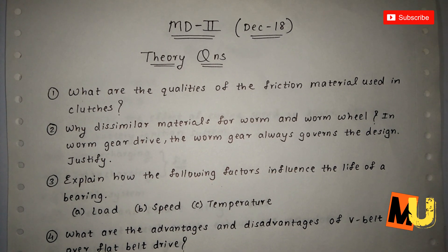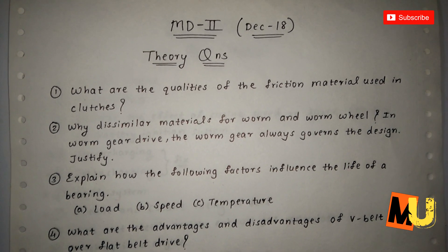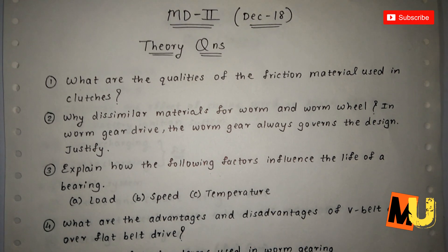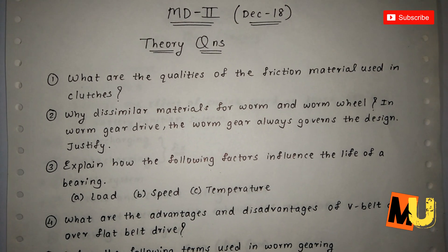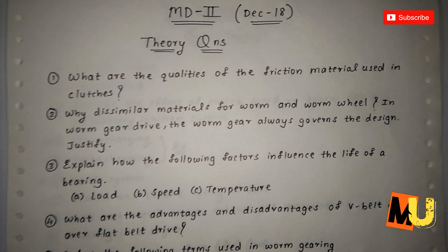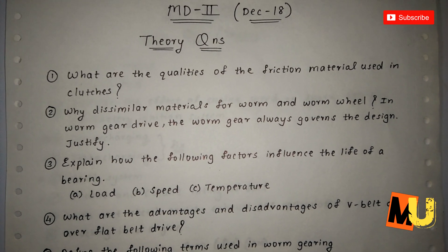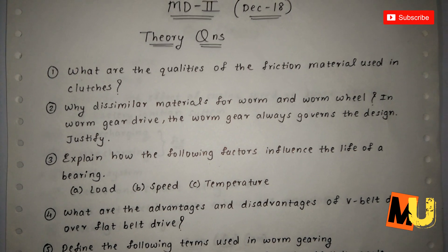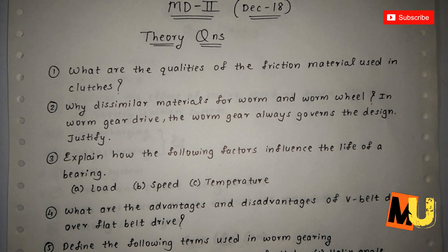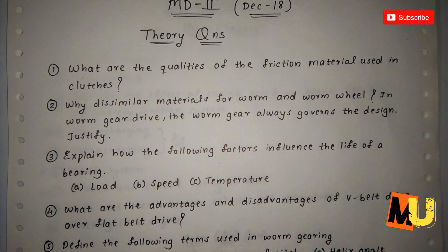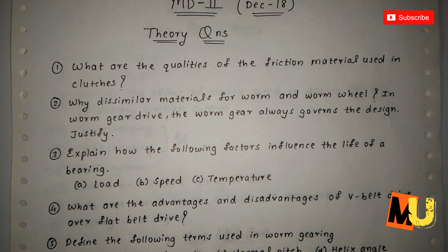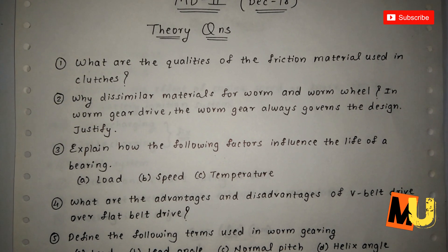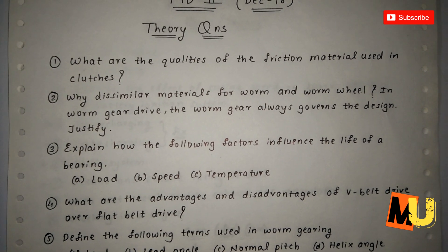What are the qualities of friction material used in clutches? This is the first question. Why dissimilar materials of worm and worm wheel in worm gear drive? The worm gear always governs the design — justify.